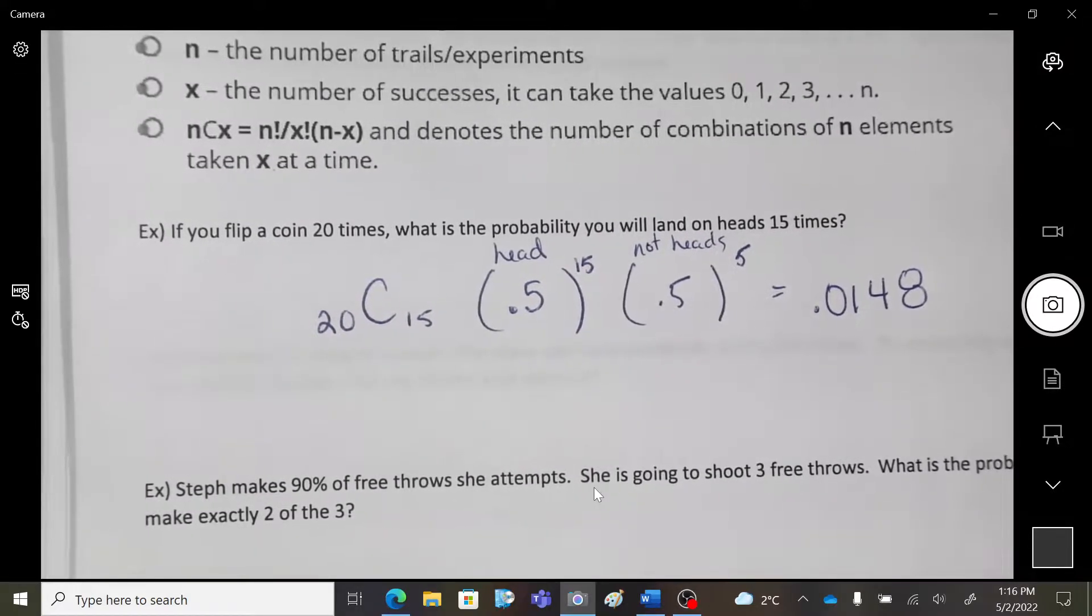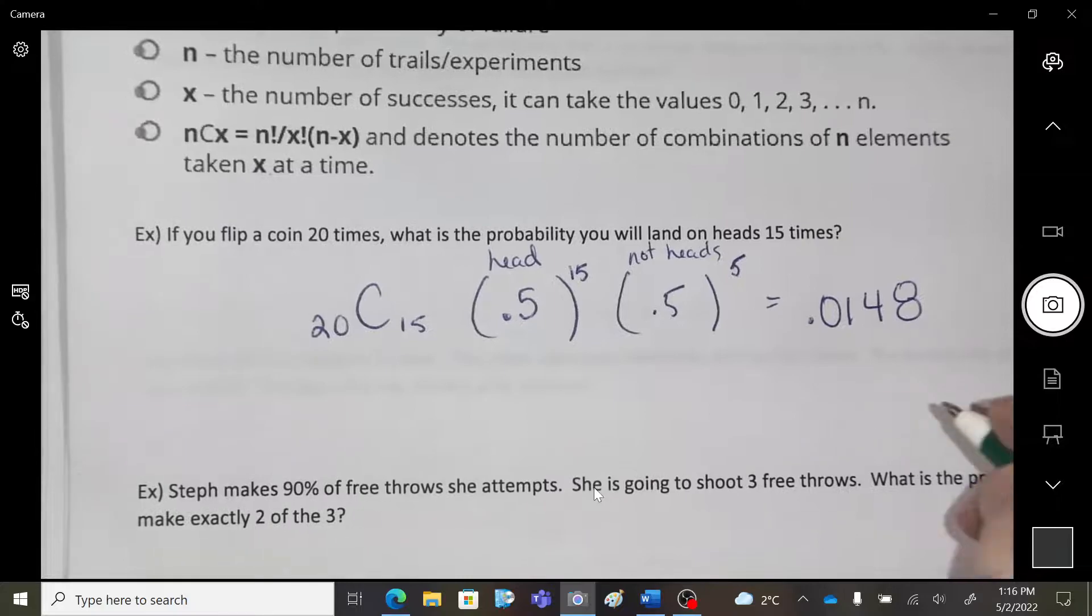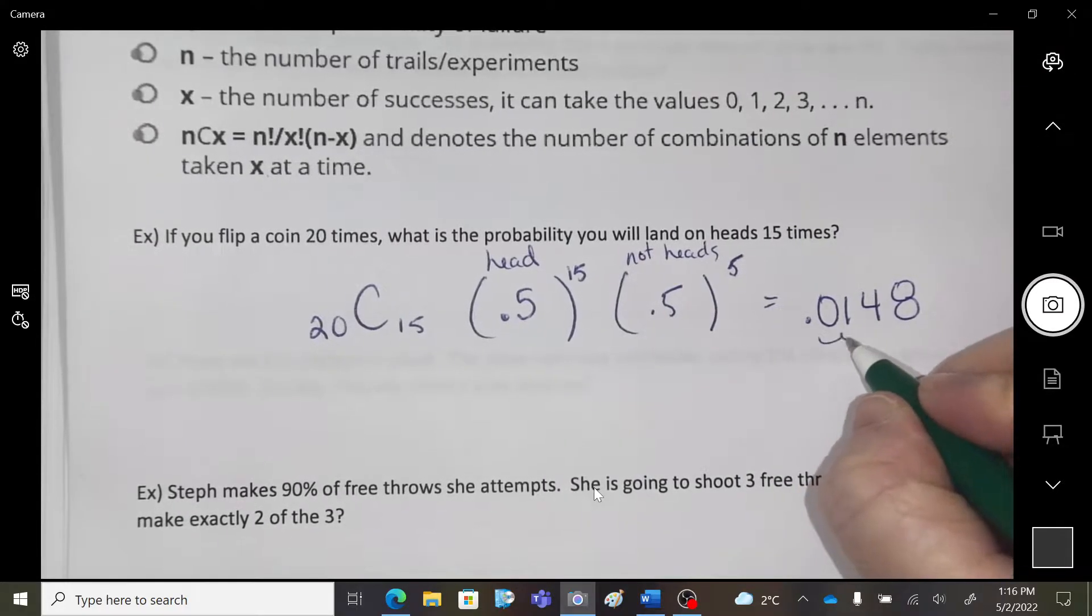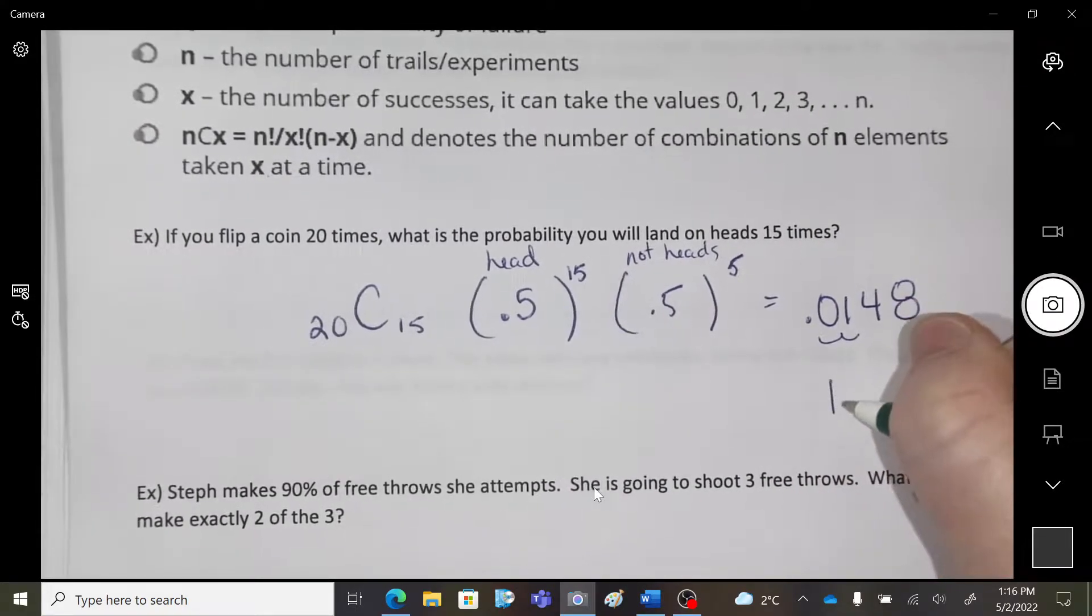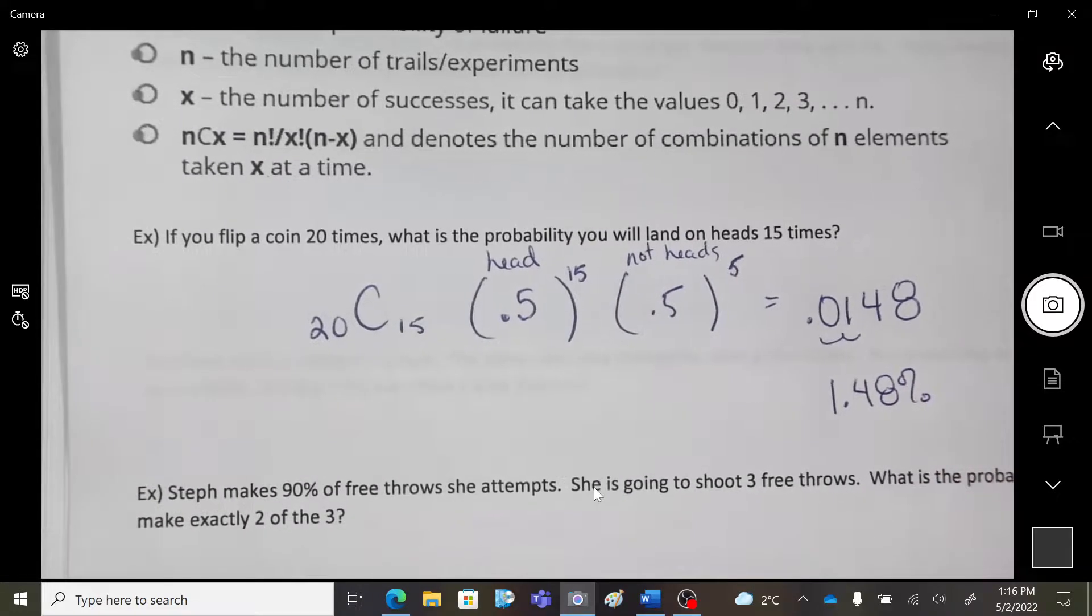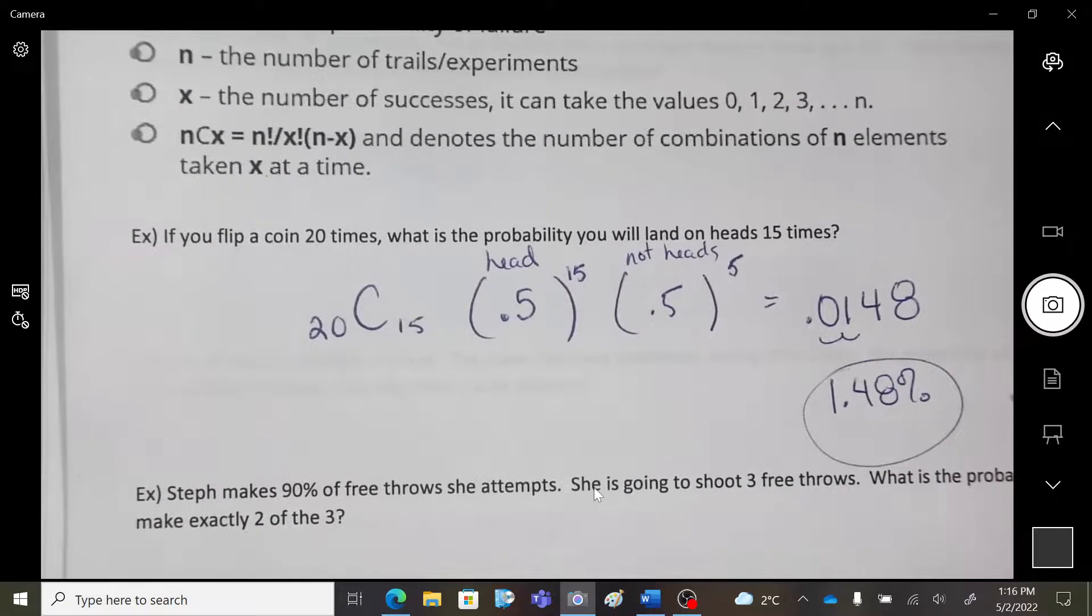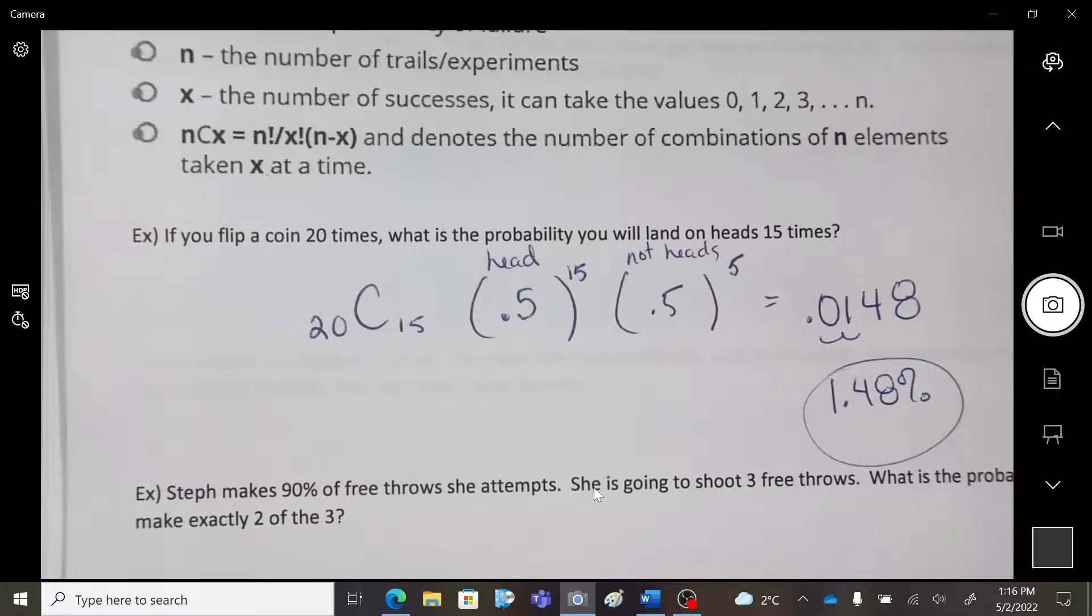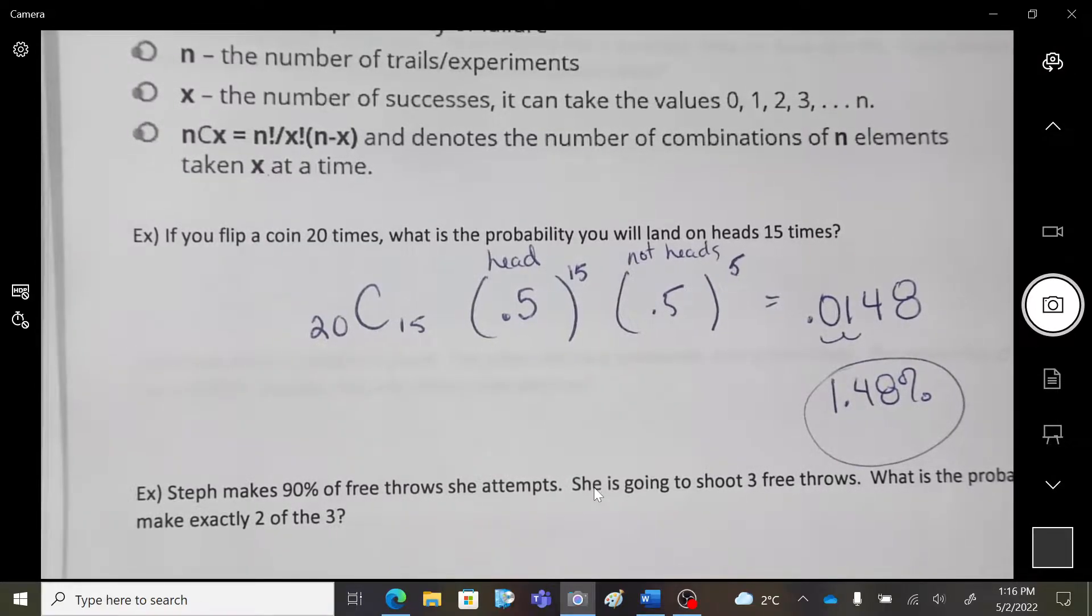Okay, so it's okay if you leave it like that. If I wanted to do a decimal, or a percent, there's a 1.48% chance, if you were to flip 20 coins, that you're going to get 15 heads. That's the percent probability that that will happen. Right? And it's low.